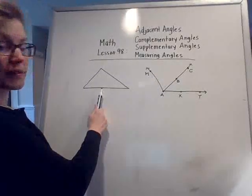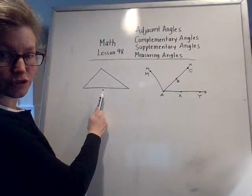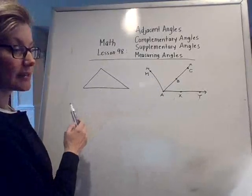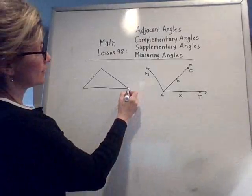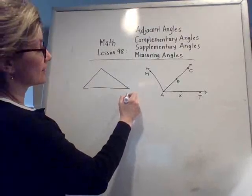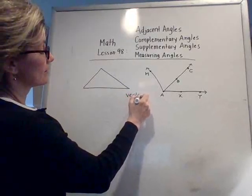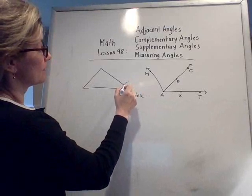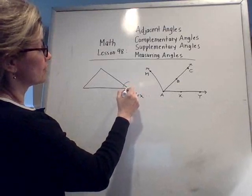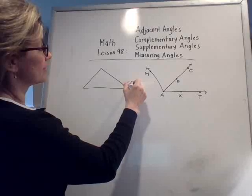So first of all, what do you see? Well, we see a triangle and let's talk about the parts of a triangle. Where these two lines come together is called the vertex. And inside this, if we want to measure this angle, we call this the angle.